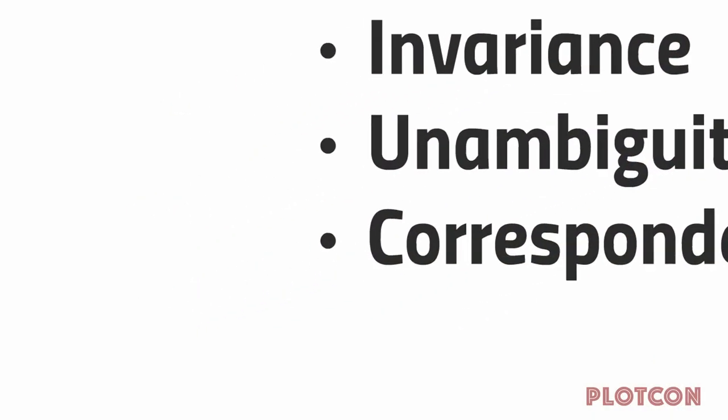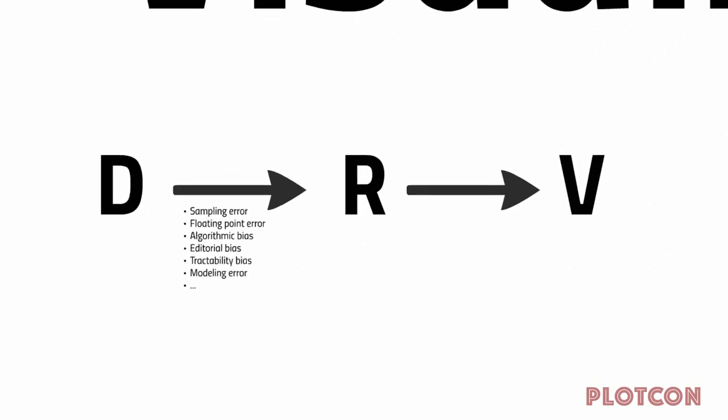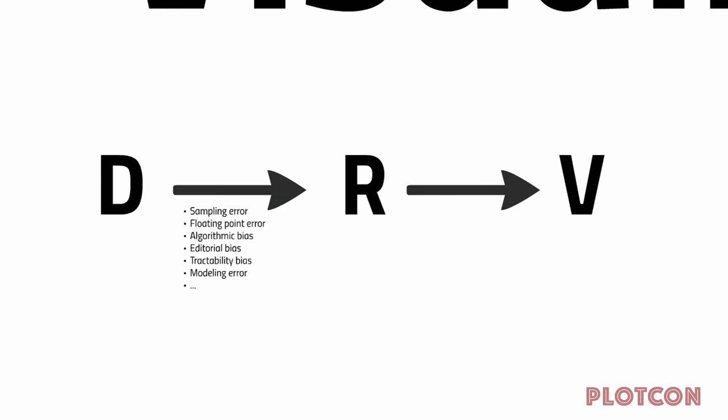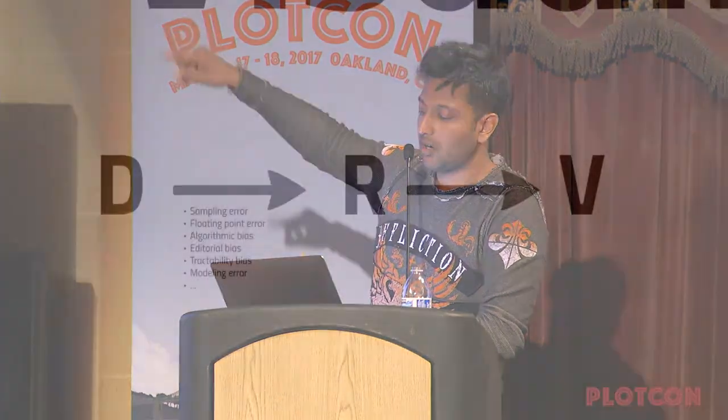In order to explain this to a computer we have to do a little math. There are three steps: the data D, the representation R, and the visualization V. Representing data is not trivial — there's a saying that the menu is not the meal. The meal is the data in the real world, and the menu is the way you represent it in a computer or Turing machine. You can have sampling error, modeling error, tractability bias, and on and on. The very act of representing something in a computer is a distorting step.